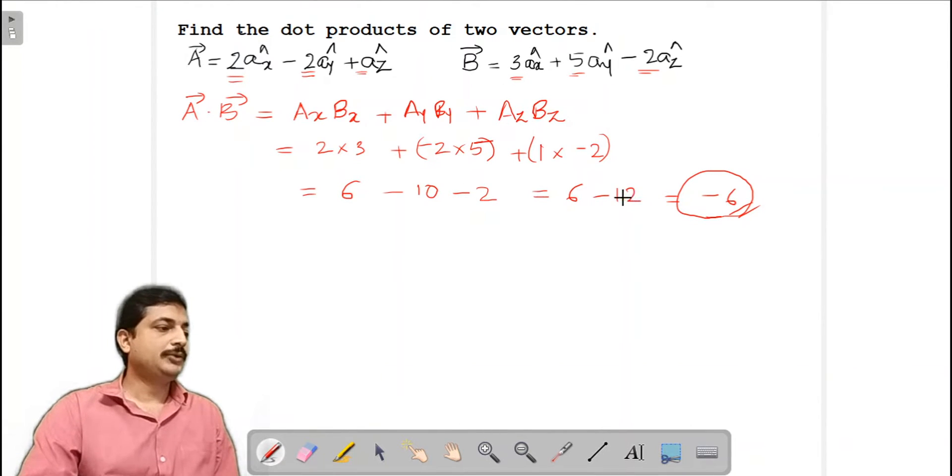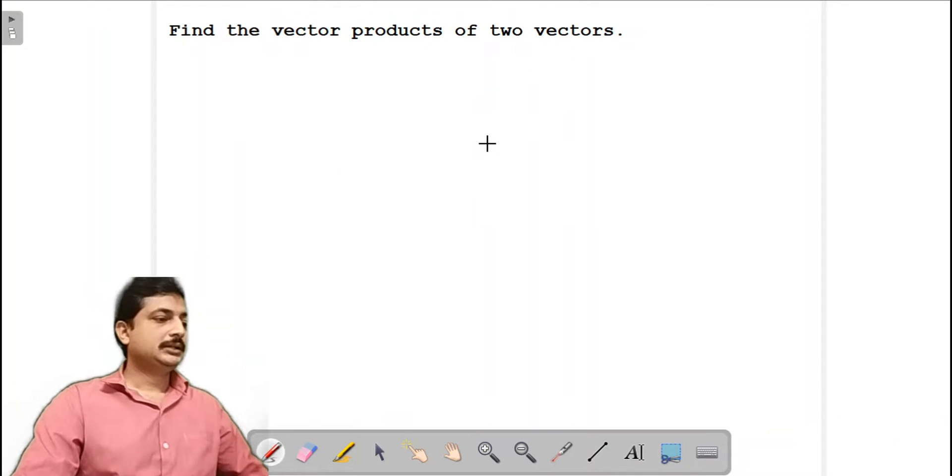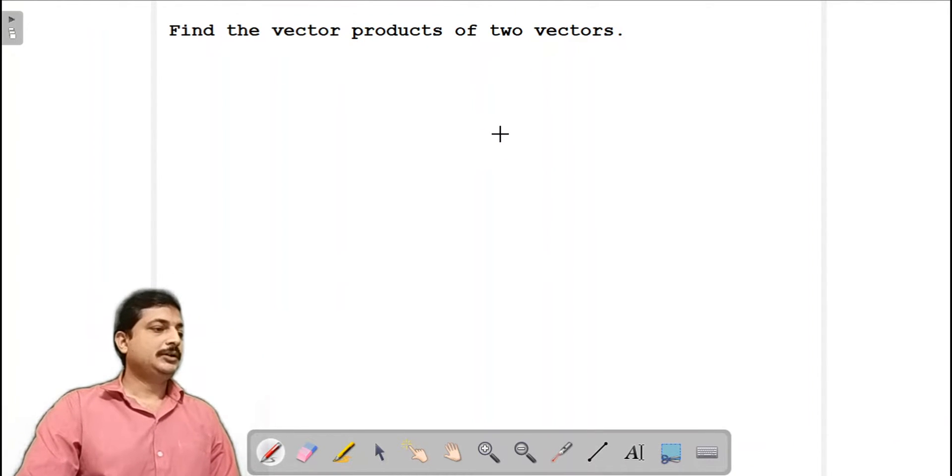Next let us see how to find the cross product of two vectors. So we are asked to find the vector product of two vectors or cross product of two vectors. Let us take an example.